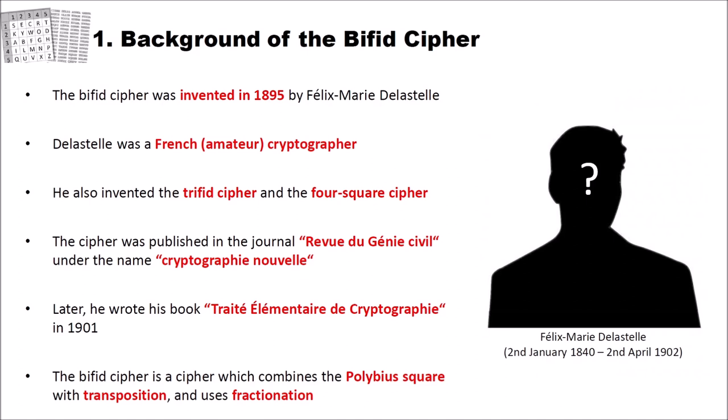And we will probably have videos about these ciphers also on this channel. The cipher was published in the journal Revue du Génie Civil under the name Cryptographie Nouvelle. And later he wrote his book Traité Élémentaire de Cryptographie in 1901, where he also published the ciphers mentioned before. And the bifid cipher is a cipher which combines a Polybius square with transposition and it also uses fractionation.